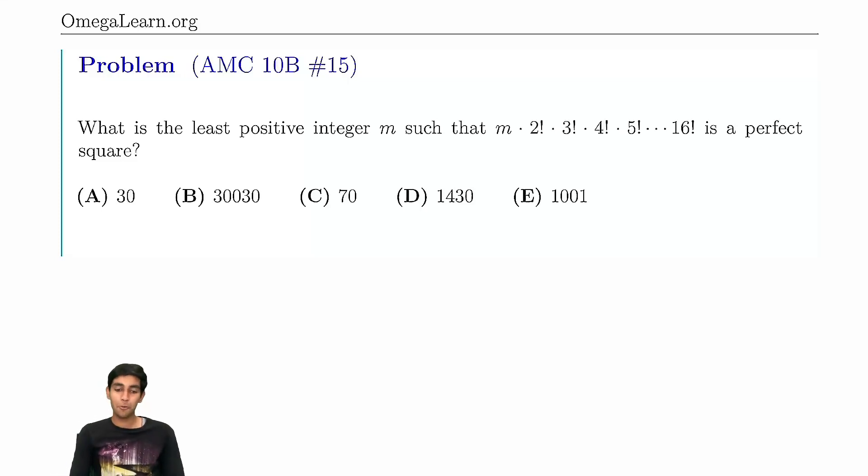This is a really cool factorial problem. Let's explore how to do it. So m times the product of many factorials is a perfect square. What is the minimum value of m such that this happens?